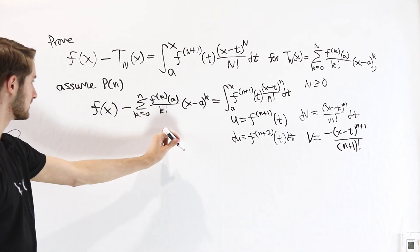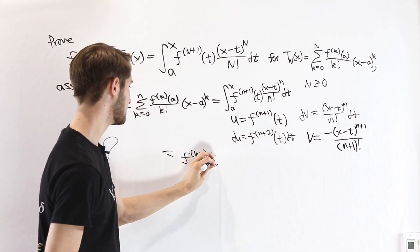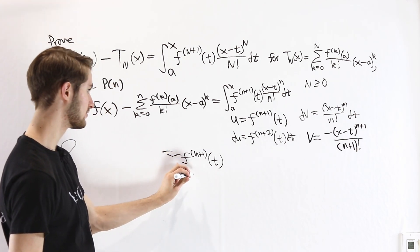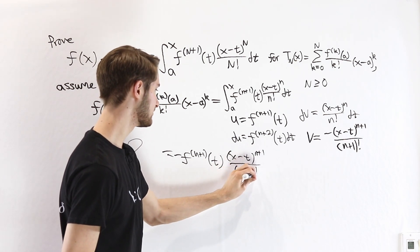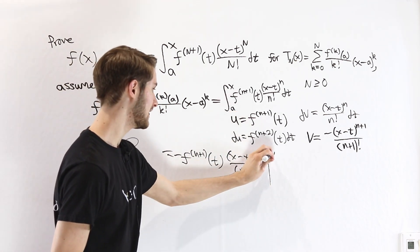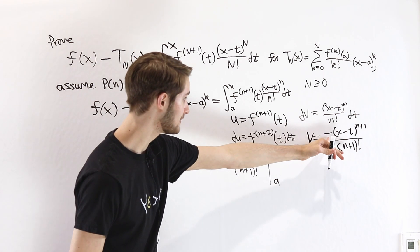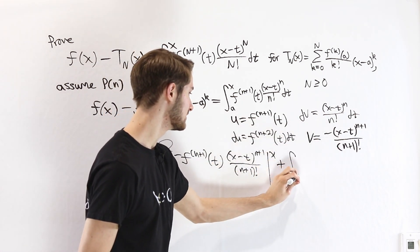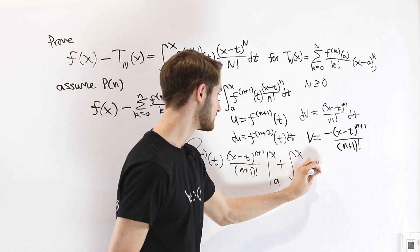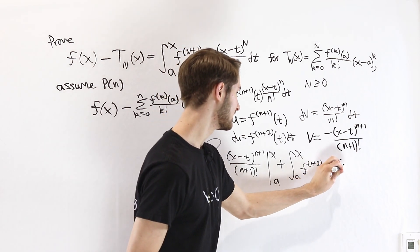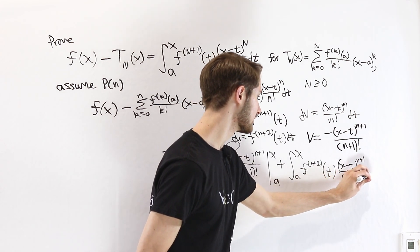Now we have all the information to do integration by parts. The uv term gives us f^(n+1)(t) times negative (x minus t)^(n+1) over (n+1) factorial, evaluated at bounds x and a. For integration by parts we subtract the integral of v du, but since v is negative, two negatives make a plus: plus the integral from a to x of f^(n+2)(t) times (x minus t)^(n+1) over (n+1) factorial dt.